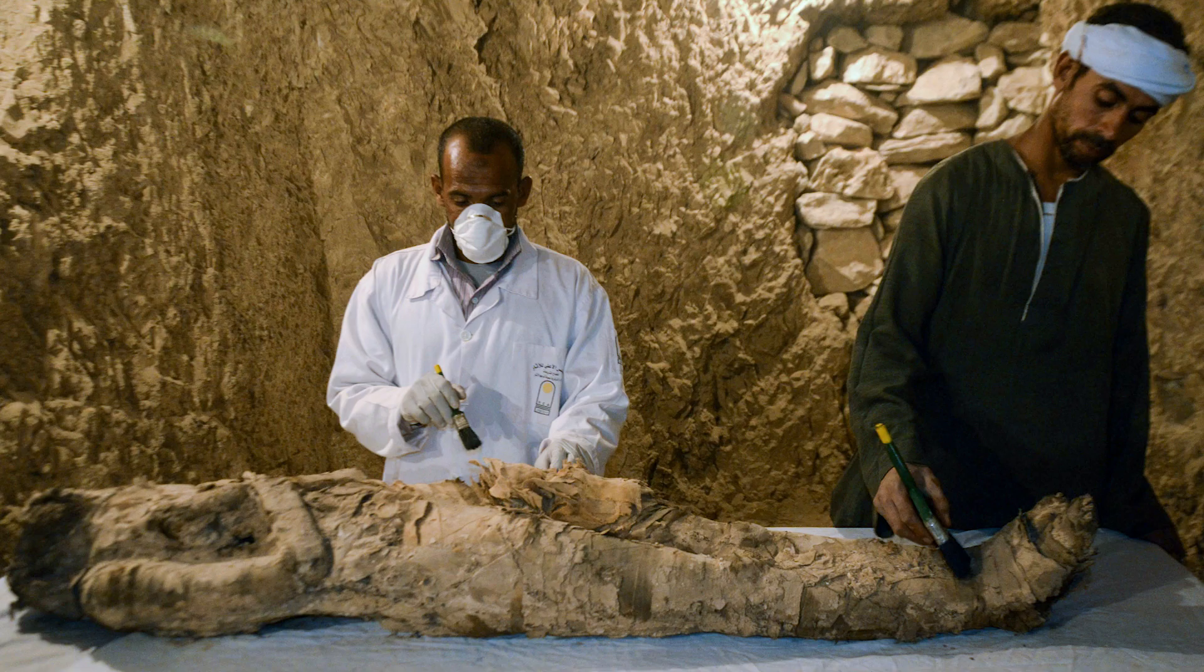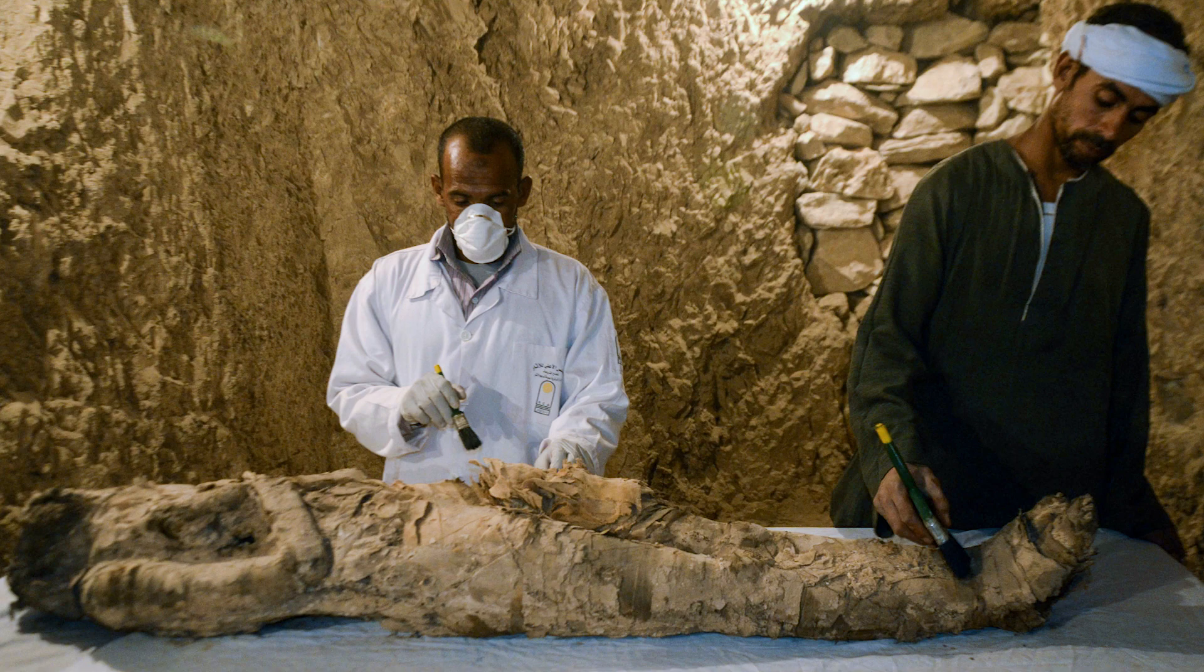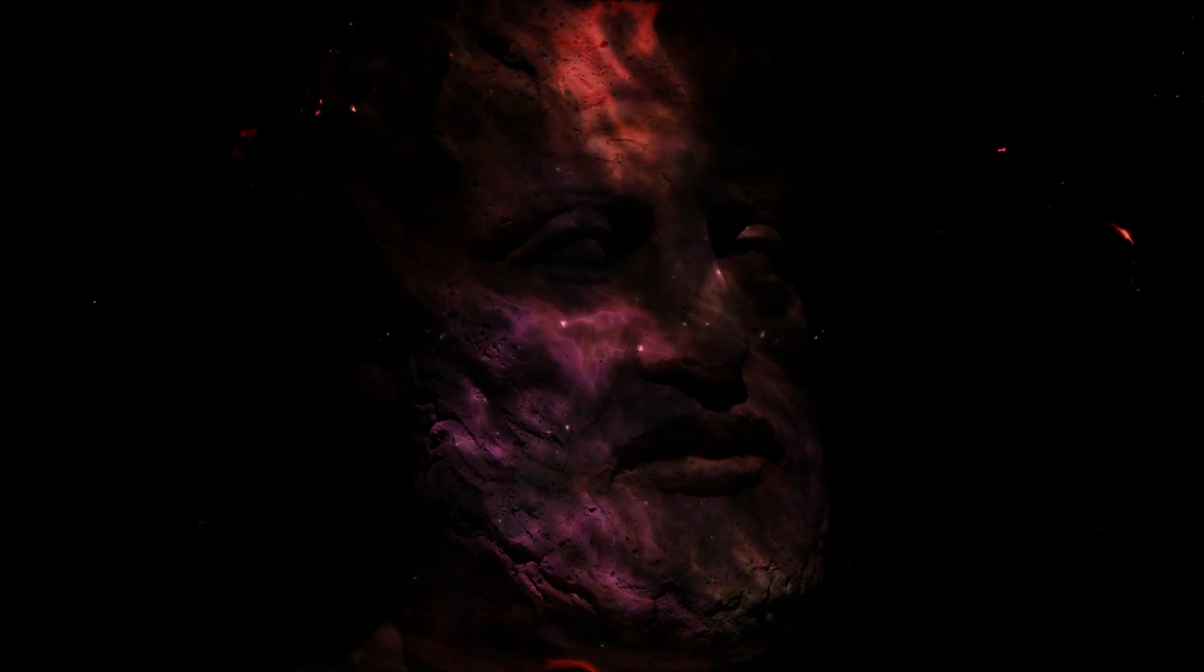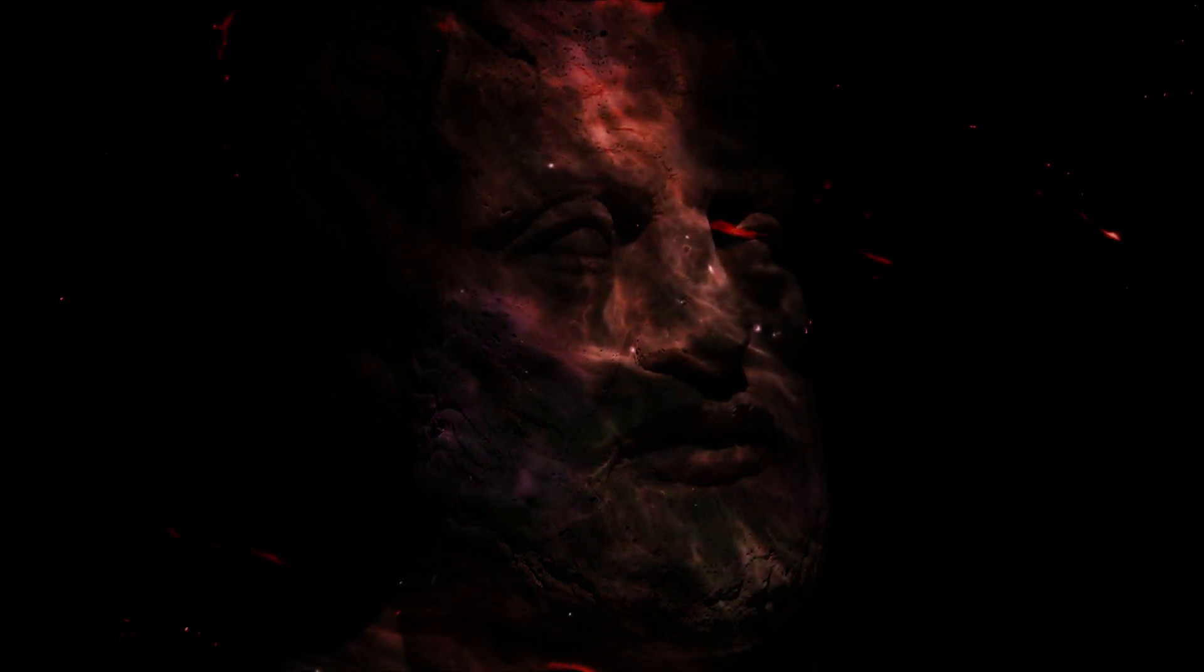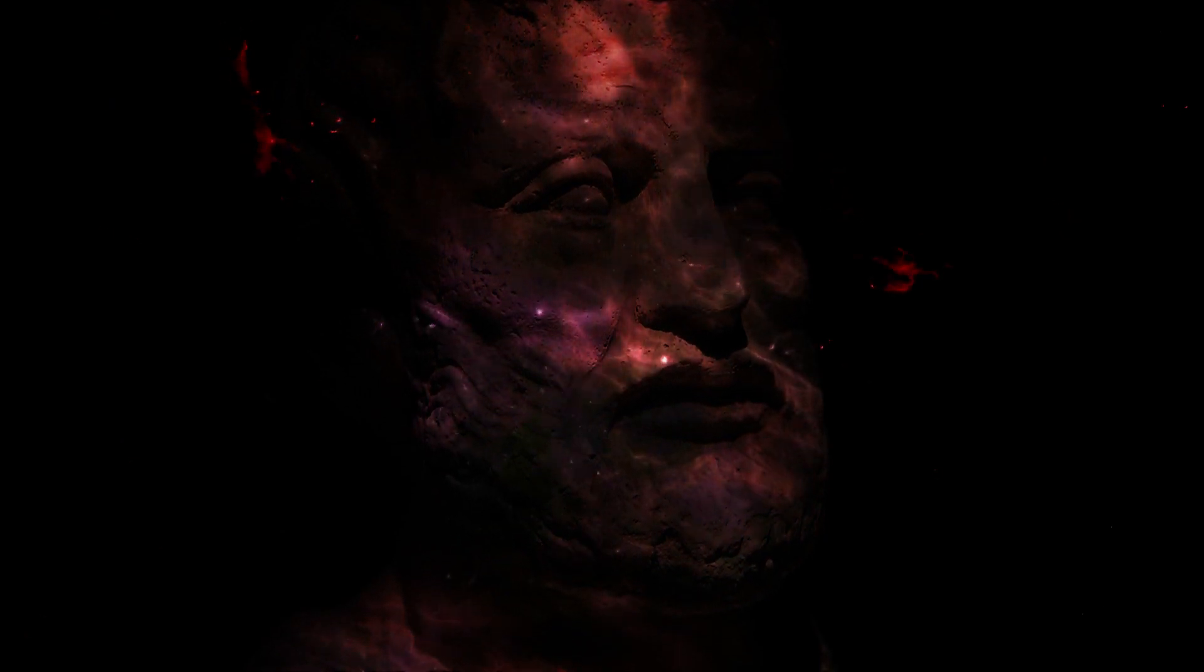Mercury has been found in Egyptian tombs dating back to 1500 BC. In about 350 BC, the Greek philosopher and scientist Aristotle described how cinnabar was heated to extract mercury for religious ceremonies.